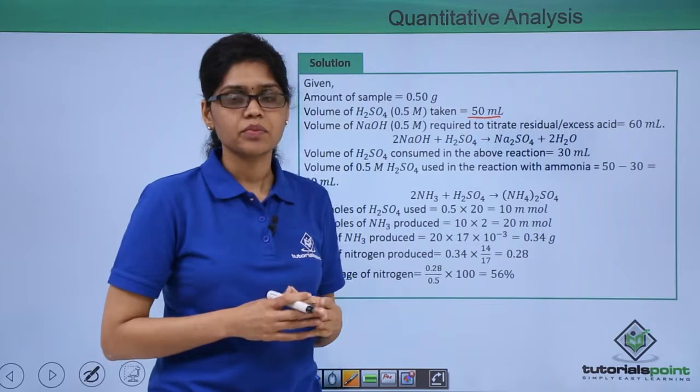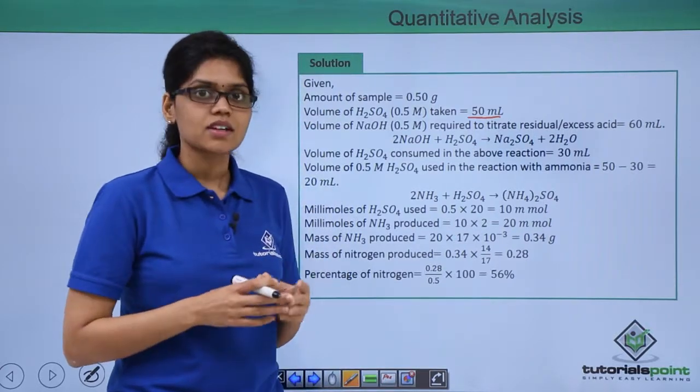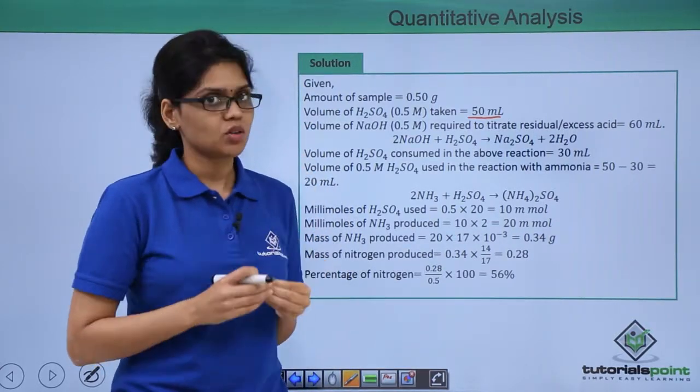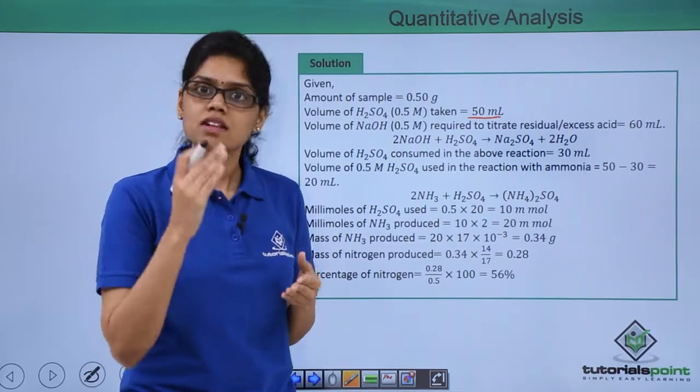Now it's very easy to understand how much sulfuric acid is actually consumed in the reaction with ammonia. That is simply 50 ml, the total volume of sulfuric acid, minus the volume of sulfuric acid consumed in the titration reaction.